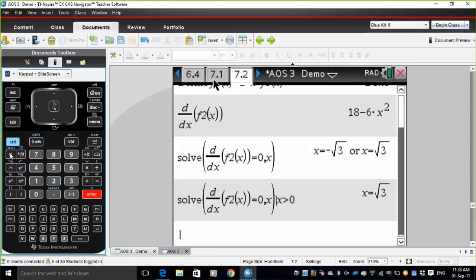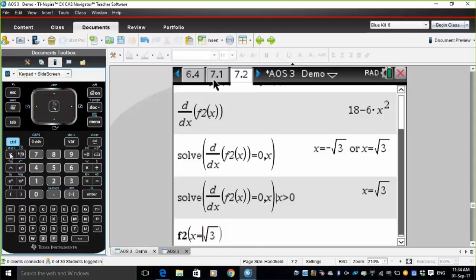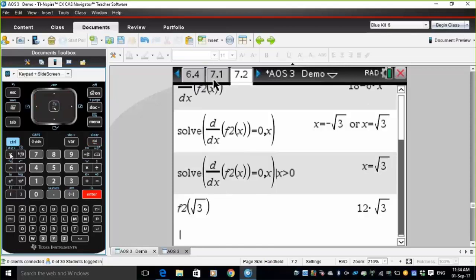All right. Let's try to find the maximum value of this function, which is f2 of x at the value of x equals root 3. So just paste it in. That deletes the x equals. So the answer there is 12 root 3.